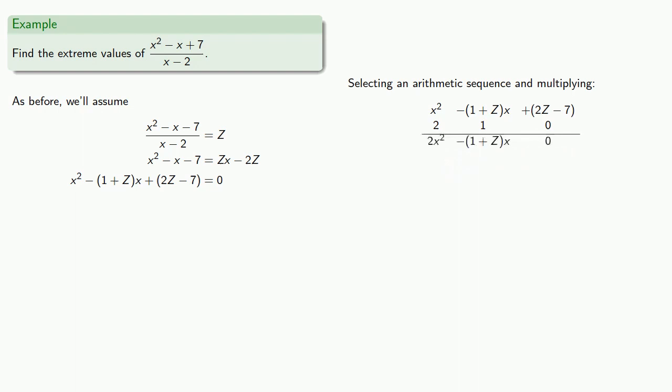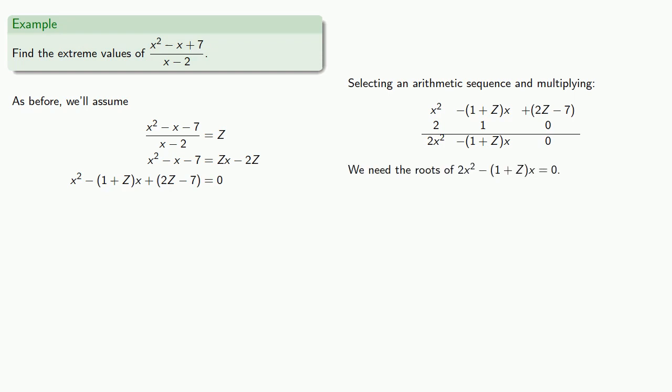We need the roots of this new polynomial. Now, while it's obvious that x equals zero is a root, it can't be a double root of our original equation. And so we can remove a factor of x.